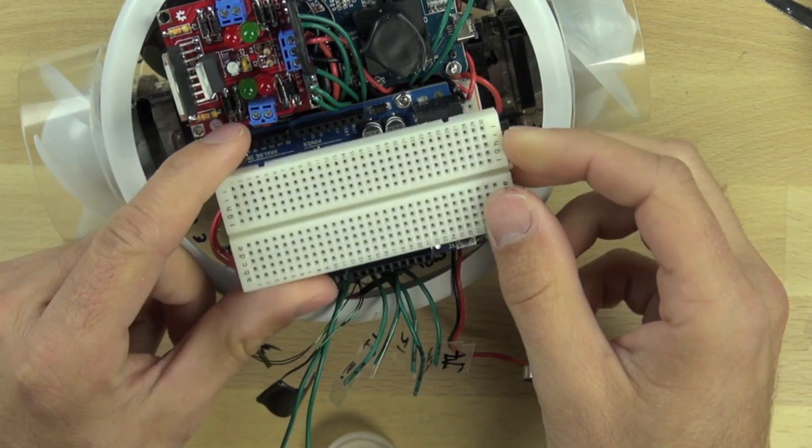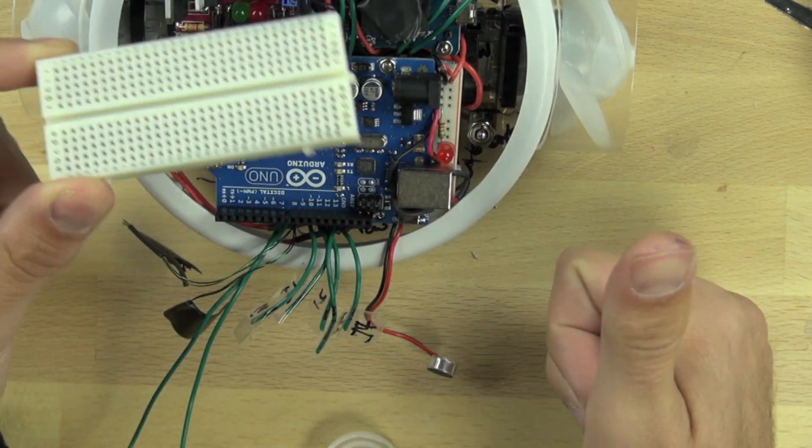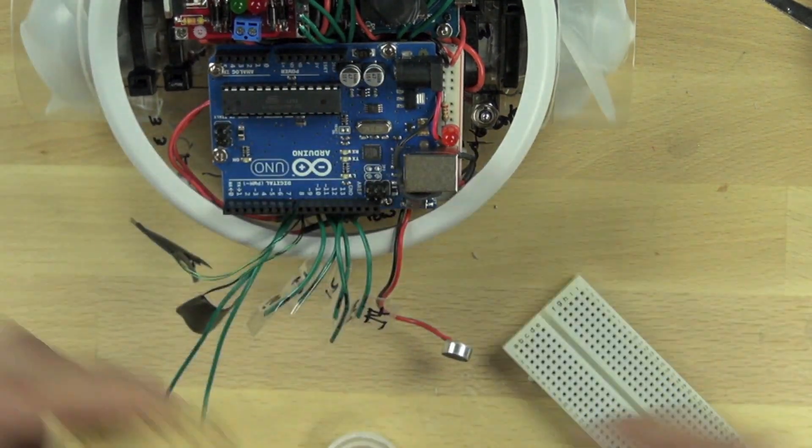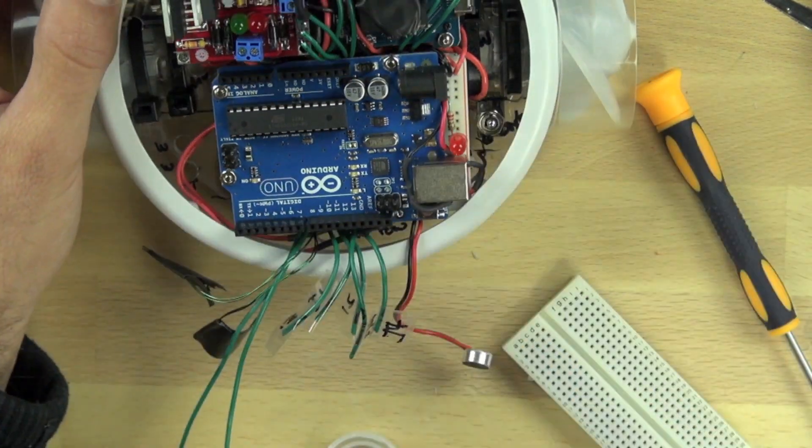To do hardware prototyping on our BitsyBot, we're going to put the center section of a breadboard on top of our Arduino. We need to connect it to something, so we're using a wine cork to put between the surface mount components on the Arduino board.